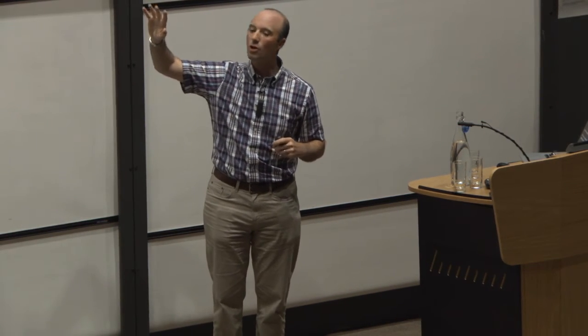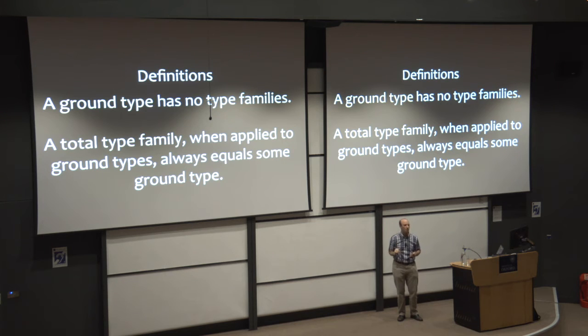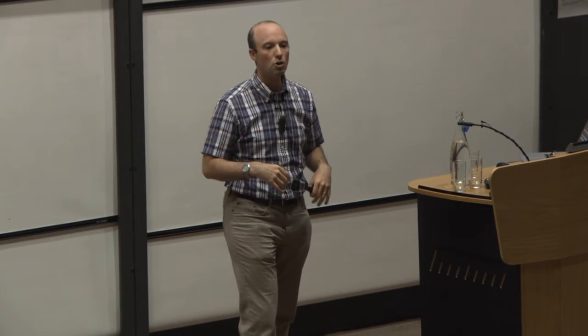So before I can explain what a constrained type family is, let me give you two definitions. So I'm going to use the term ground type to describe a type that mentions no type families anywhere. So something like int or list of bool. A total type family is one that, if it's given a bunch of ground arguments, will always lead to another ground type. So essentially, we'll always evaluate.